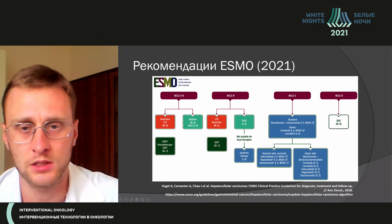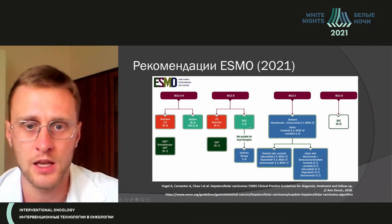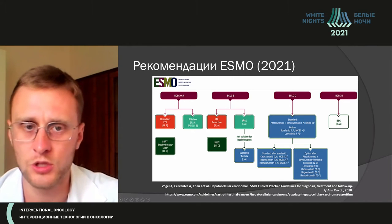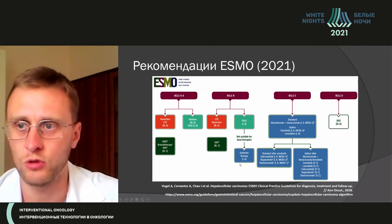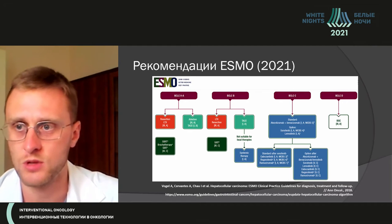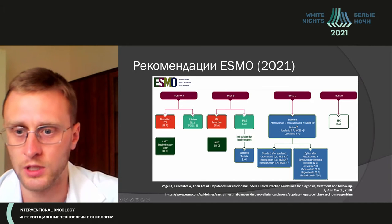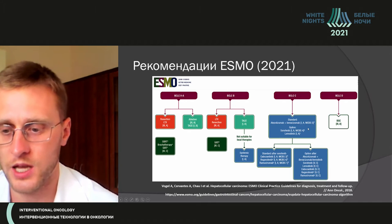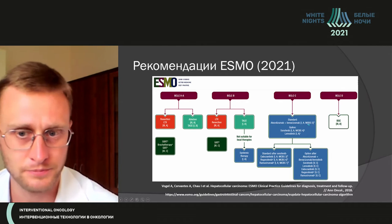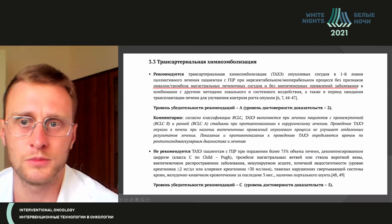The ESMO classification differs from Barcelona — it includes early and very early disease stages, with the classical stage in the middle. Systemic chemotherapy is gradually expanding into intermediate HCC stages. There is limited understanding of local methodology in this classification, making patient selection somewhat difficult.